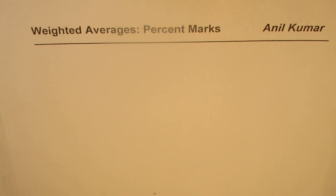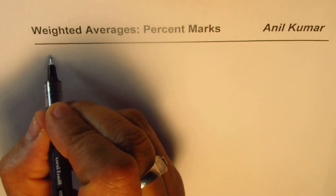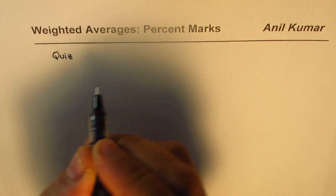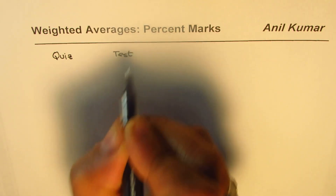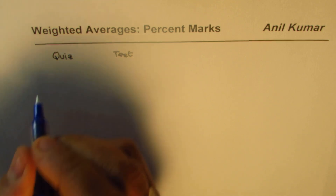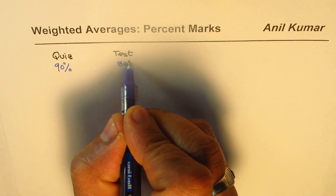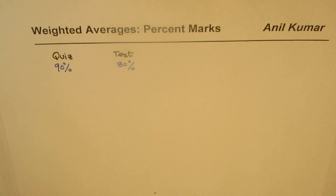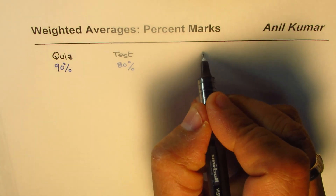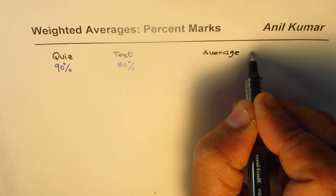I'm Malil Kumar and in this video we will understand the concept of weighted average. We'll take percent marks as an example. Let's say you have had two tests so far — one we are calling a quiz and the other a test. In the quiz you get 90 percent marks and around 80 percent marks in the test. Now the question is you need to find the average of the two.